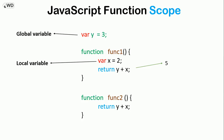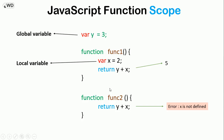Now say we have another function func2 that returns y plus x. When we call this function it will return an error: x is not defined. Y is a global variable so func2 has access to it. But x is a local variable belonging to func1, so func2 has no access to it. Global variables can be accessed by all functions in our code, but local variables are only accessible by the function that defines them. That's the lesson on functions in JavaScript — for practice, I'll see you guys in the next video.